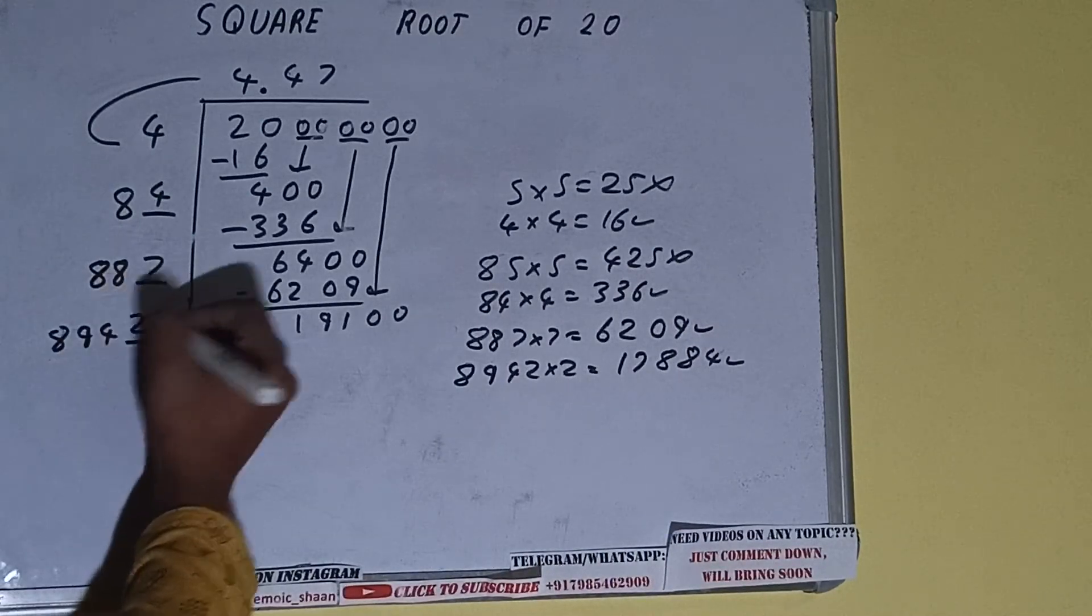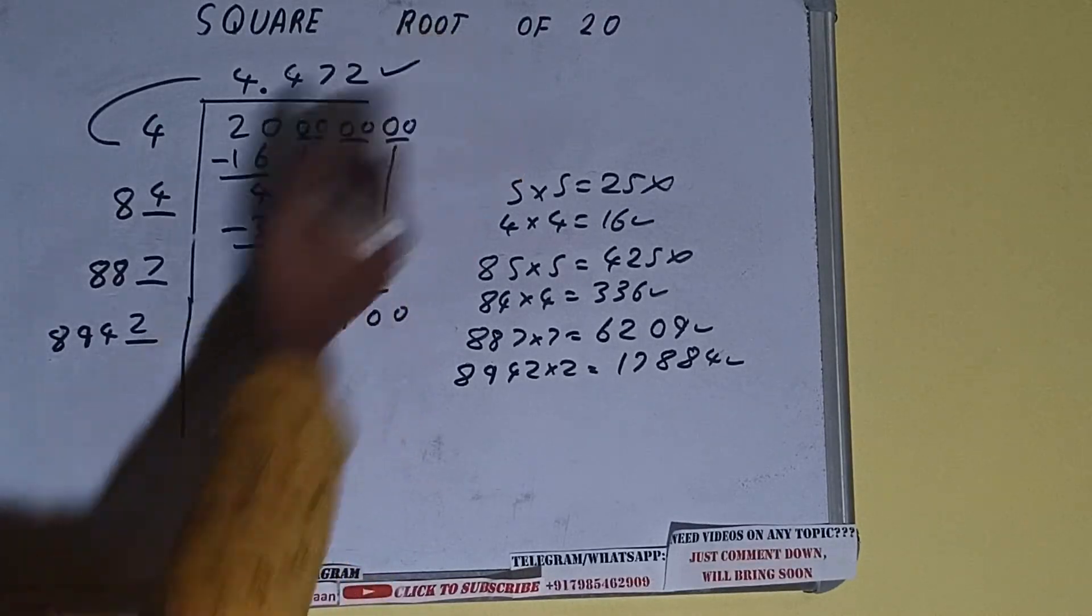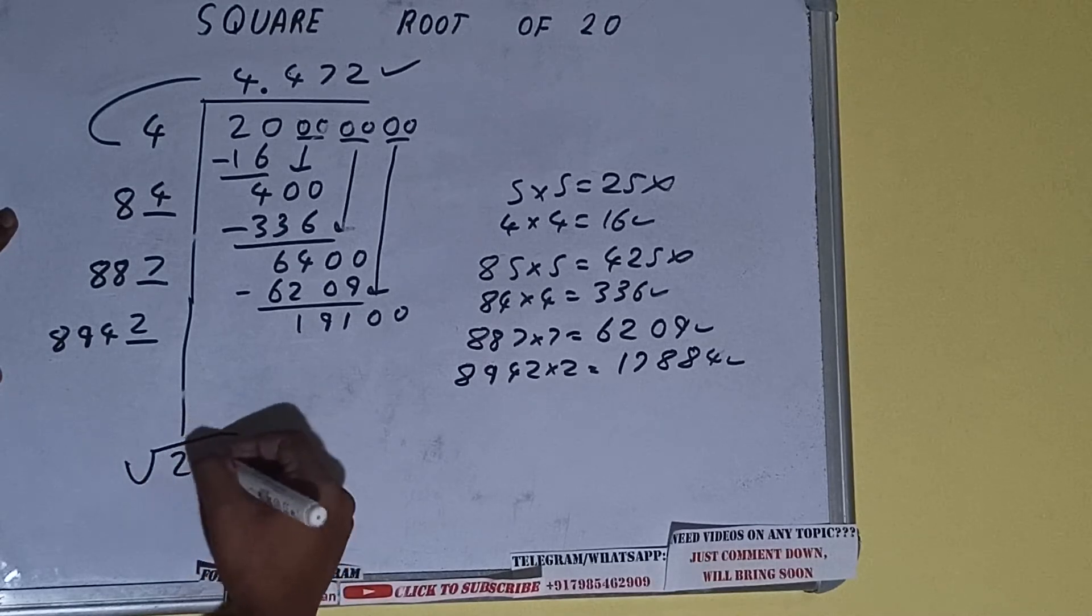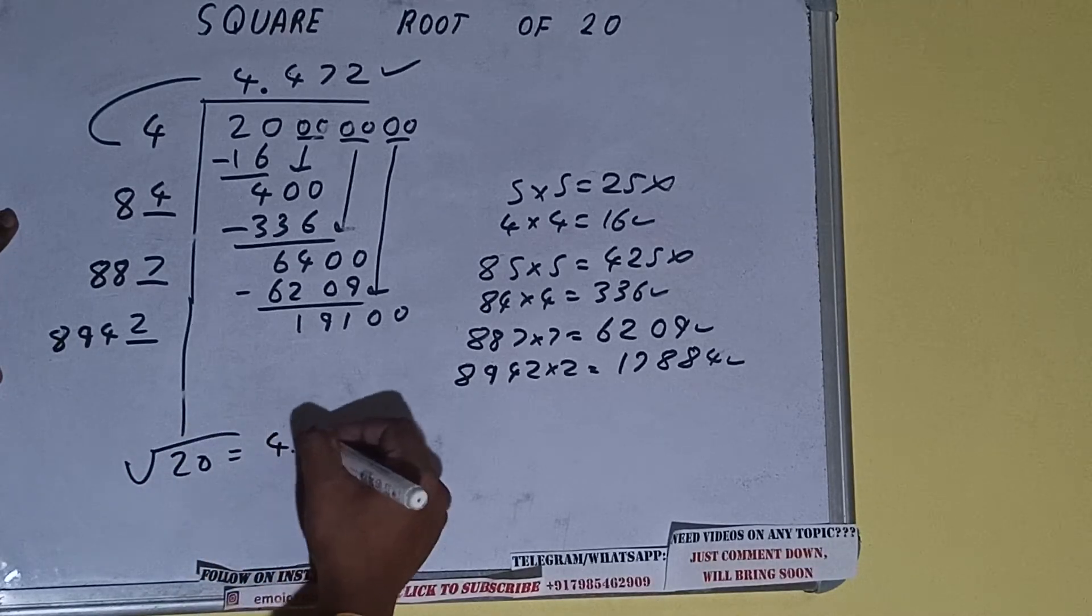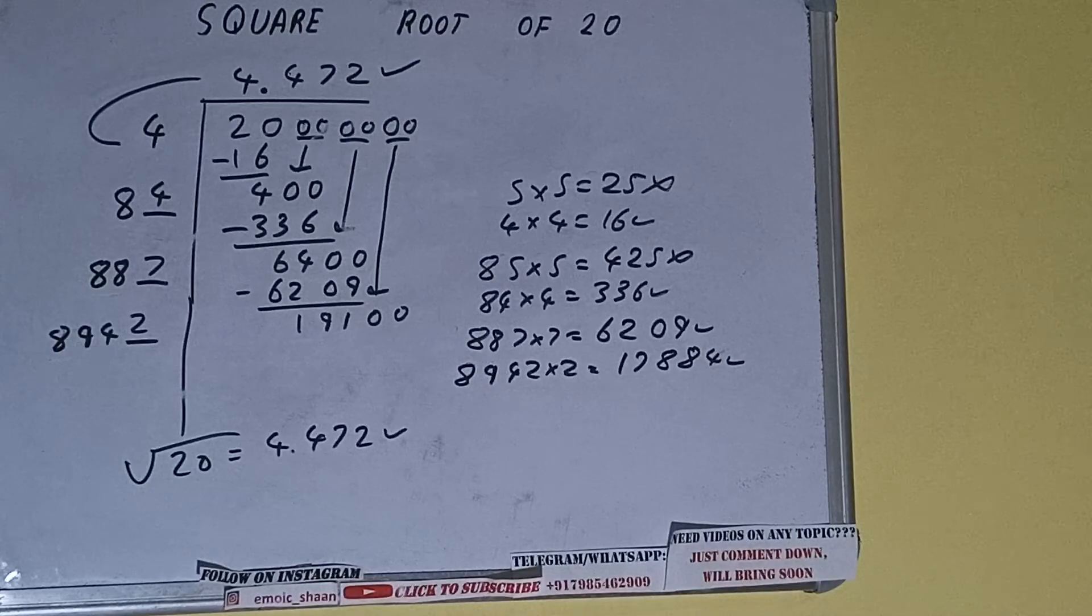So 2 here and 2 here, but we don't need to calculate because we got the answer correct up to 3 decimal places. So square root of 20 is equal to 4.472. That will be the answer. So this is all. If you found the video helpful, please do hit the like button, do consider subscribing, and thanks for watching.